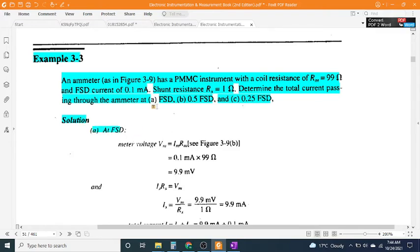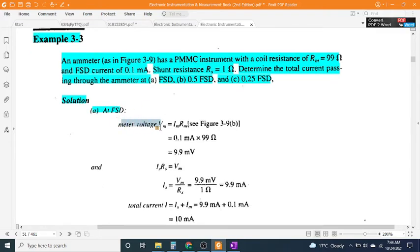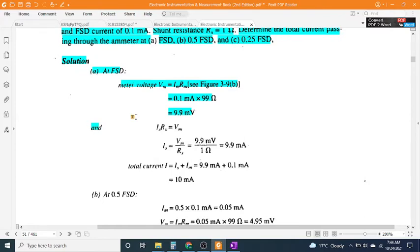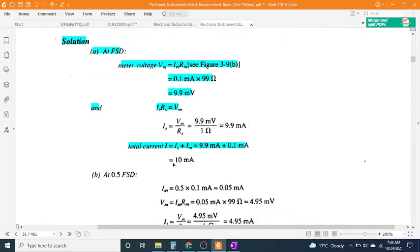Solution, part A at FSD: Meter voltage V_M = I_M × R_M = 0.1 mA × 99Ω = 9.9 mV. I_S = V_M / R_S = 9.9 mV / 1Ω = 9.9 mA. Total current I = I_M + I_S = 9.9 mA + 0.1 mA = 10 mA.